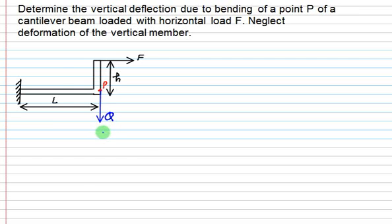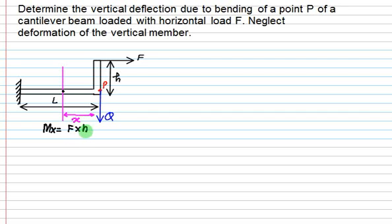We will solve this problem by the strain energy method. Consider a section at distance X. About this point, what is the value of MX? At this point, F will do the clockwise moment, and if that moment is F into H, this moment is independent of X. The moment due to Q about this point is dependent on X, and it is also clockwise. So this is Q times X.